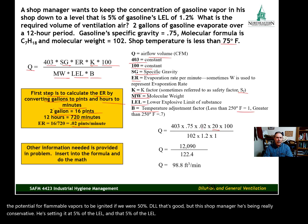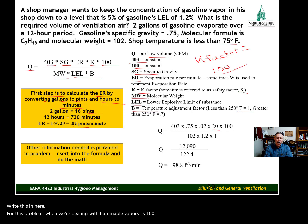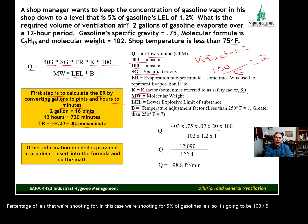That 5% of the LEL converts to a K factor of 20. I don't have that anywhere here on the formula, but the K factor for this problem when we're dealing with flammable vapors is 100 divided by the percentage of LEL that we're shooting for. In this case, we're shooting for 5% of gasoline's LEL, so it's going to be 100 divided by 5 equals 20.